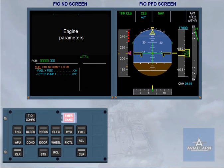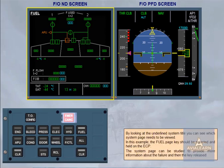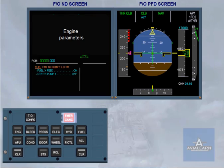In this example, the fuel page key should be selected and held on the ECP. The system page can be studied to provide more information about the failure and then the key released. The engine warning display returns and the ECAM actions can be carried out.